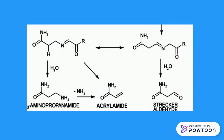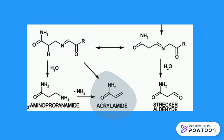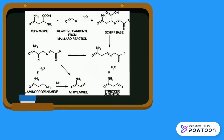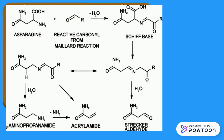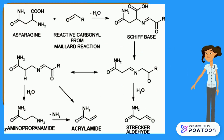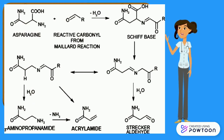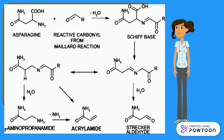Alternatively, decomposition of the decarboxylated Schiff intermediate can also occur to form acrylamide via the elimination of an amine. That's all for the process of acrylamide formation. Once again, this is the overall process at a glance.